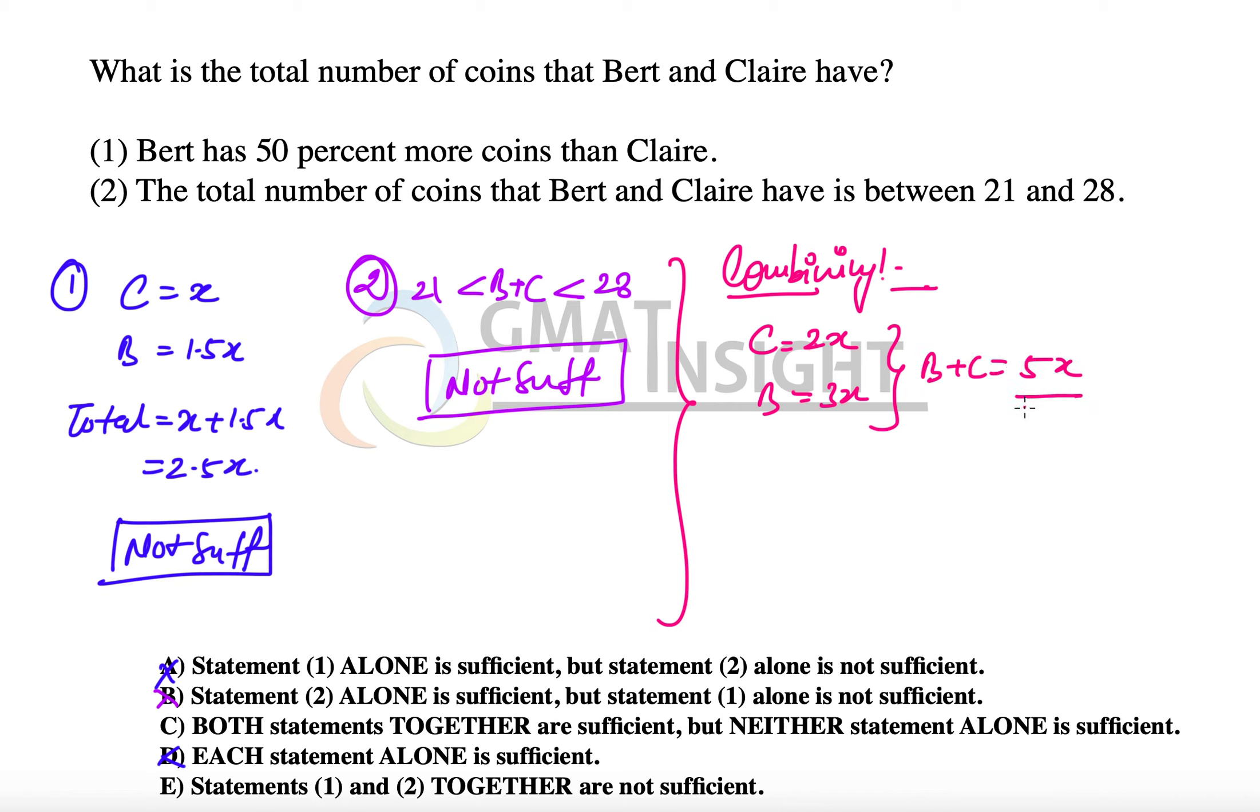Which gives us one hint: it must be a multiple of 5. The second statement says that B plus C must be between 21 and 28. So how many values of B plus C are possible in that range which are multiples of 5? There is only one multiple of 5 between 21 and 28, and that is 25. The unique value is obtained and sufficient, and the final answer is option C.